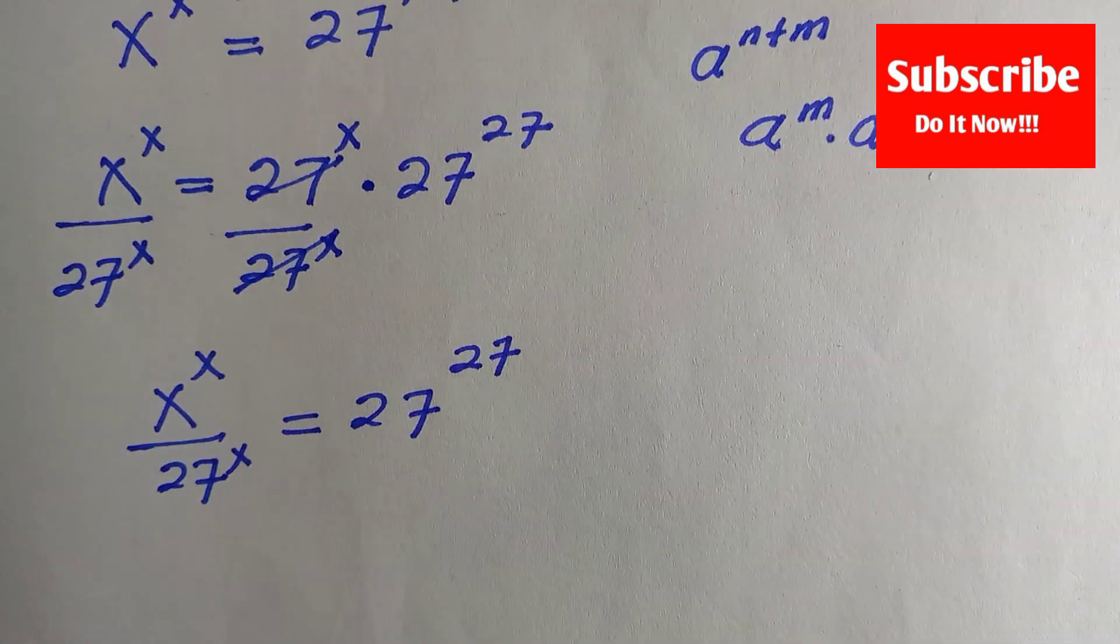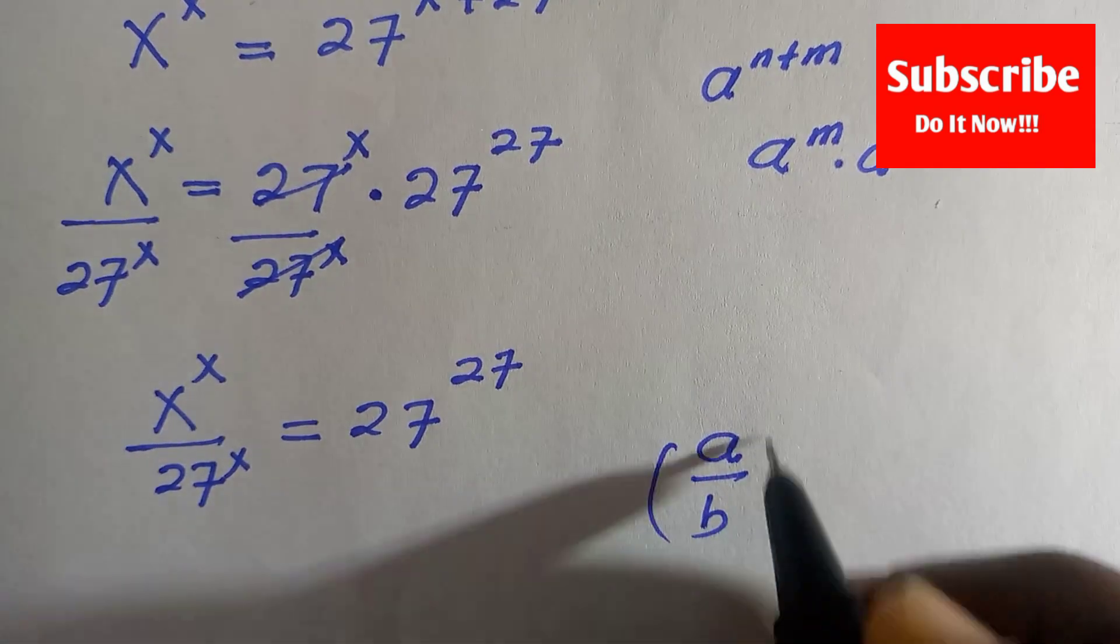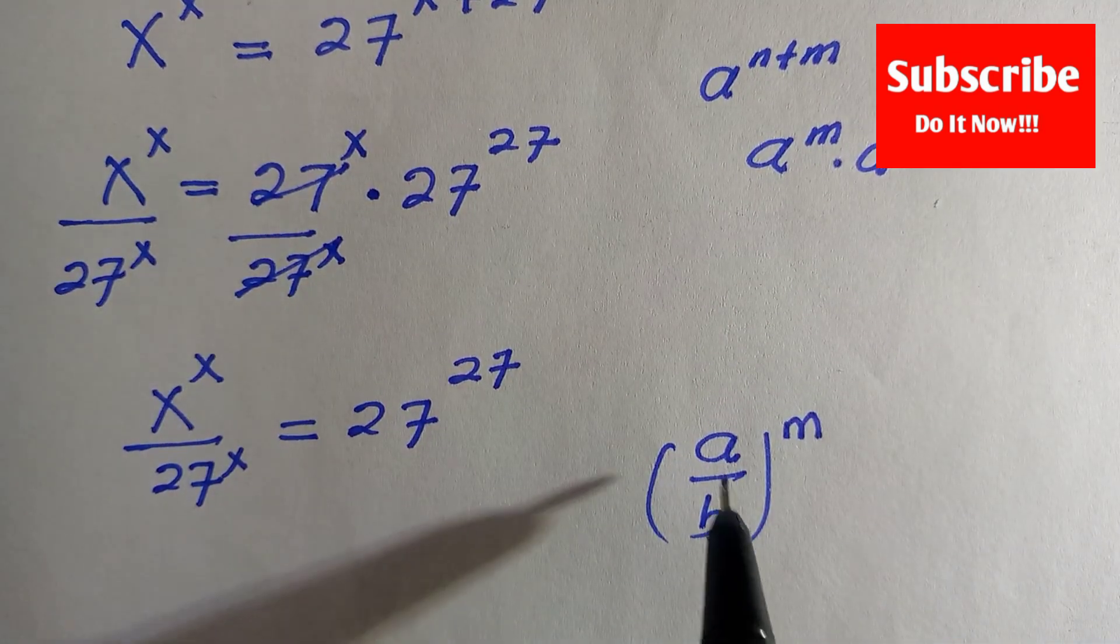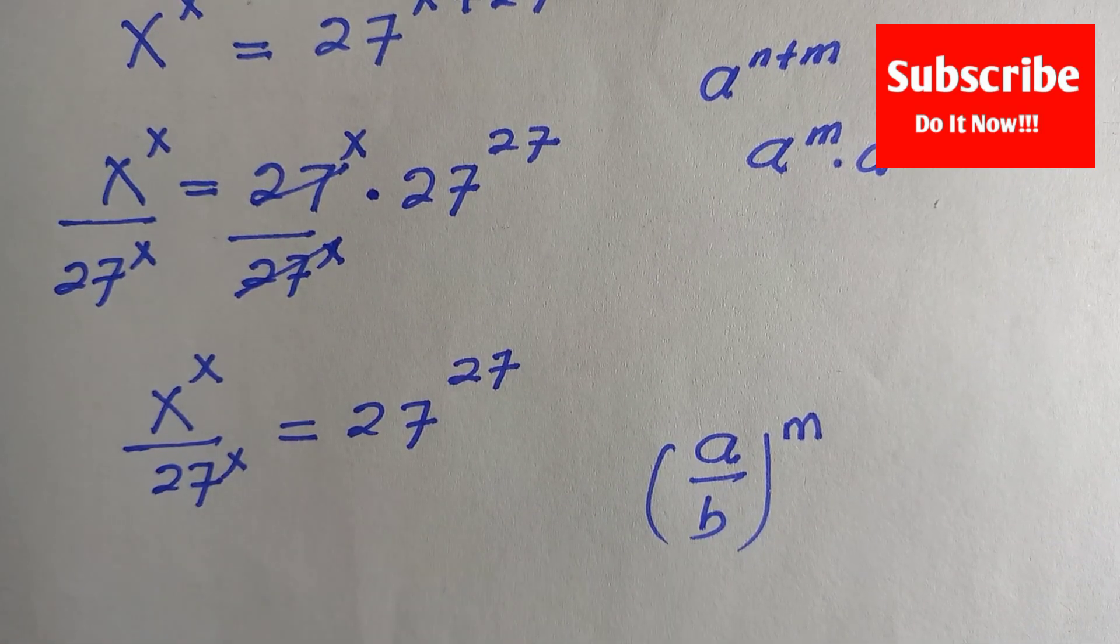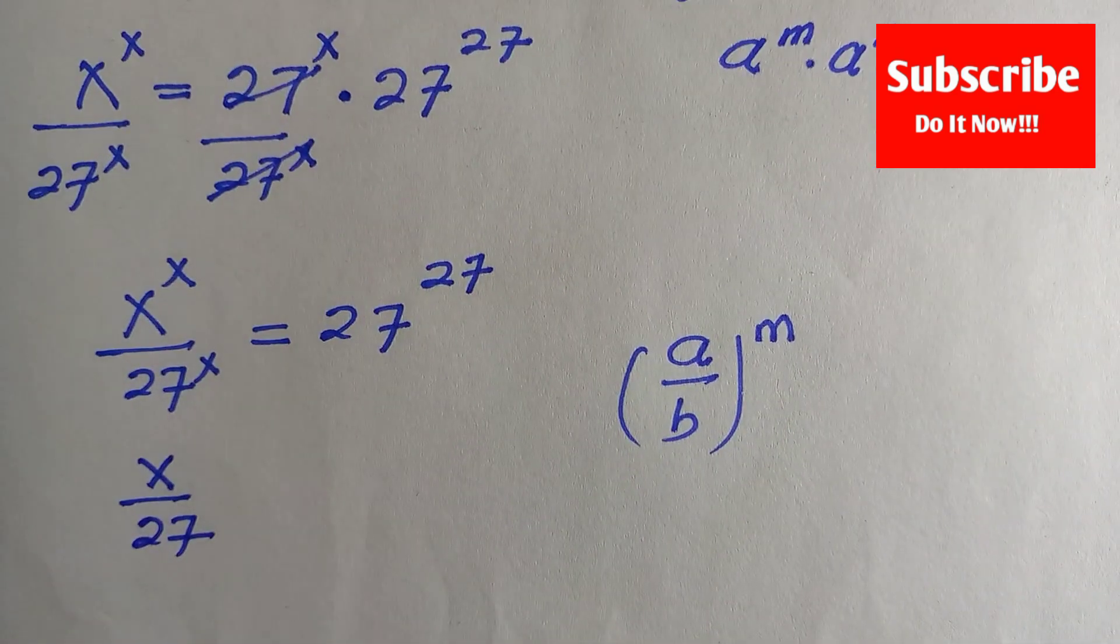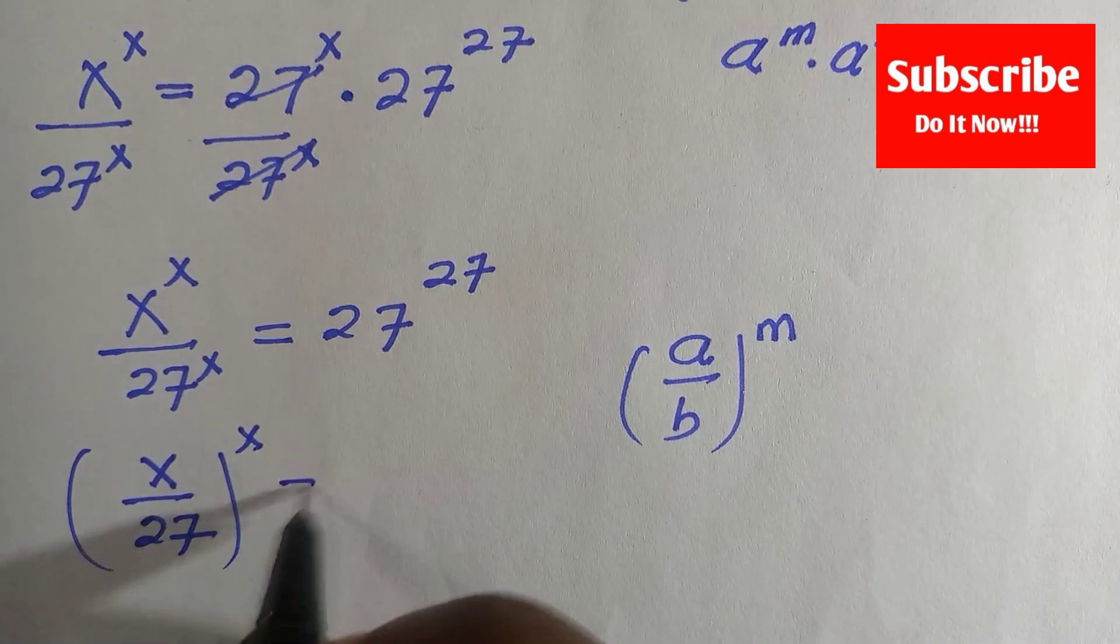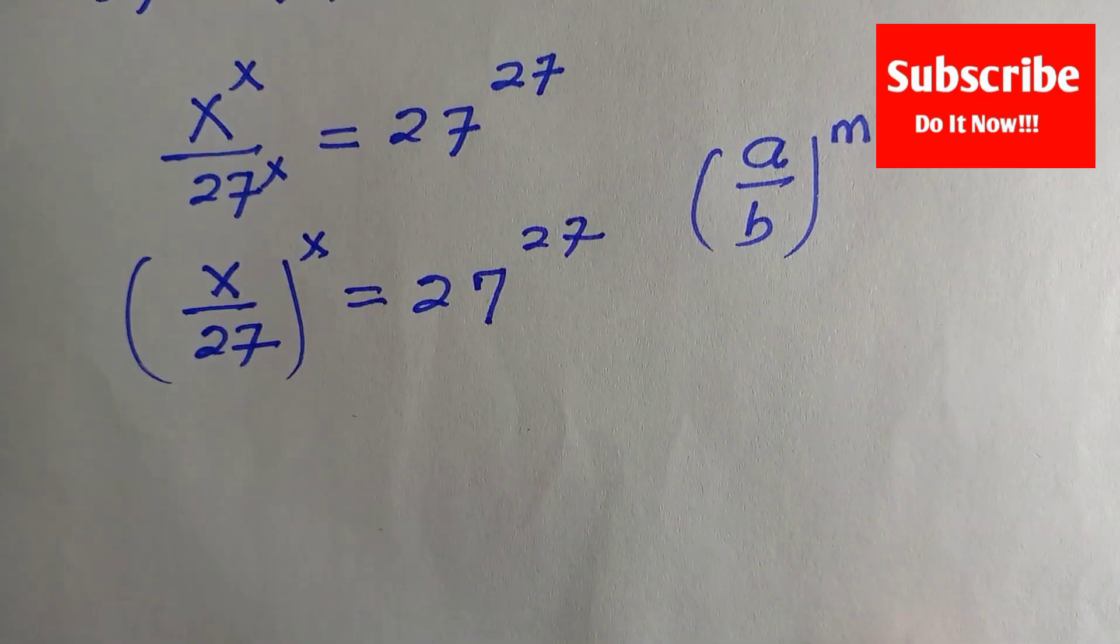From this we still have another rule that states if you have (a/b)^m. By applying this rule here, we are going to write this as (x/27)^x = 27^27.